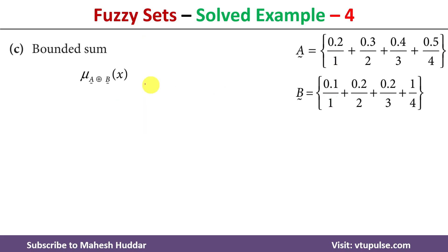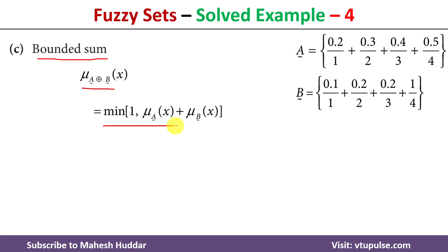The next one is bounded sum, denoted by this symbol. The membership value of x in the bounded sum is calculated as: minimum of 1, or the sum of the membership values of x in both fuzzy sets. We take the minimum between these two things, meaning the result will be at most 1 in the bounded sum.